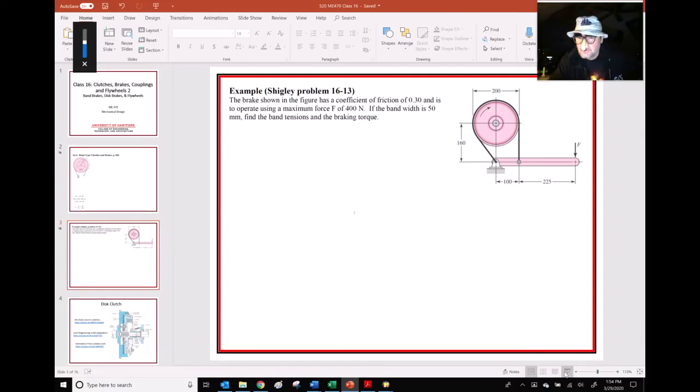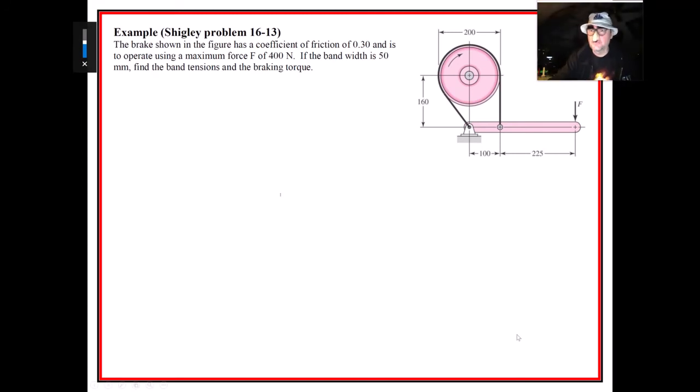Alright, here now we've got an example for a band brake. I've got my systems bucket hat on and another Van Halen shirt. I'm wearing my Van Halen hoodie because I turned off the air conditioner yesterday and forgot to turn it back on, and it's really loud. Here's a typical band brake problem, 16.13 out of Shigley, and one of the first things we want to try to get is the geometry.